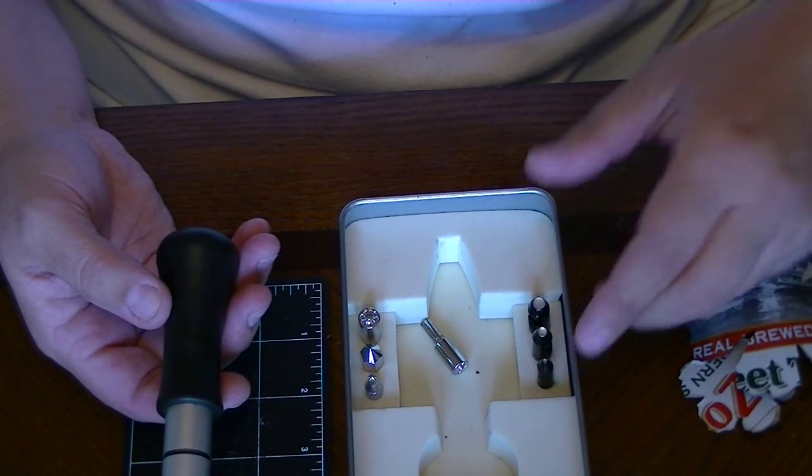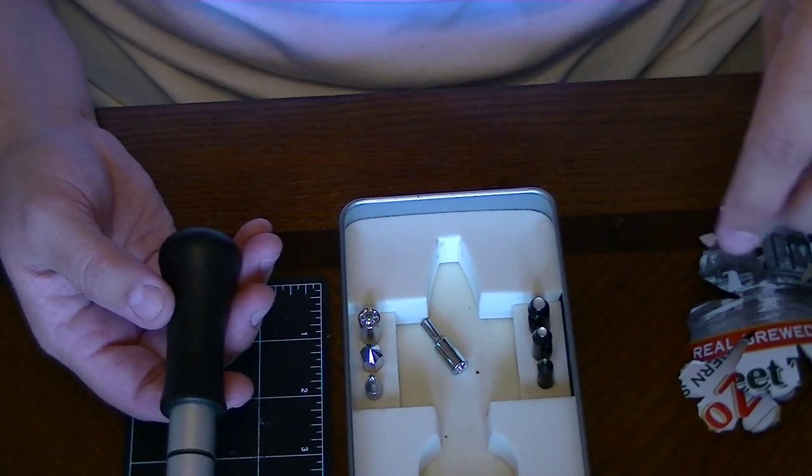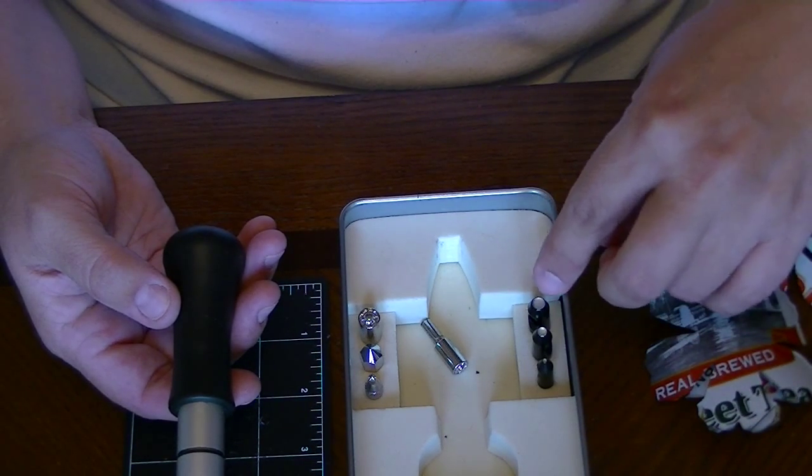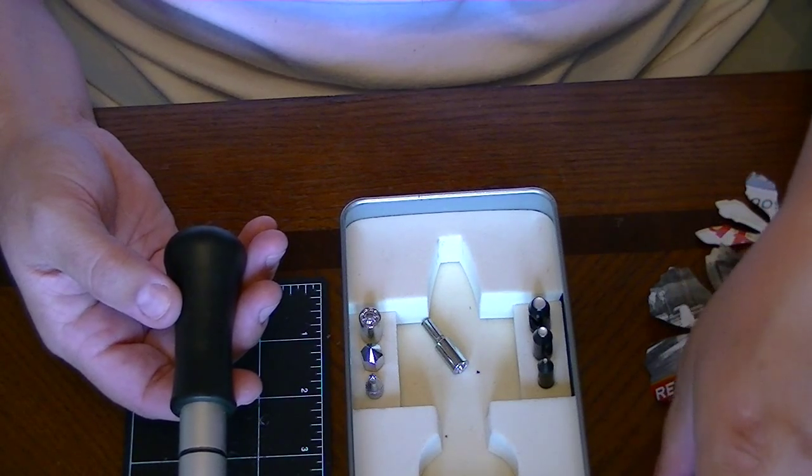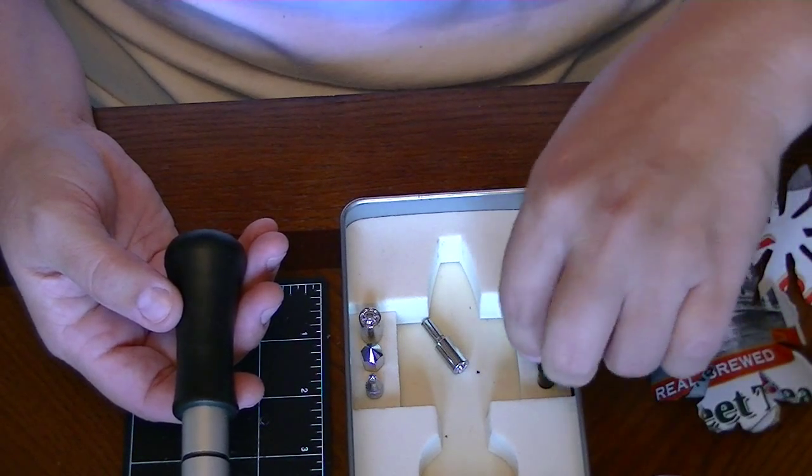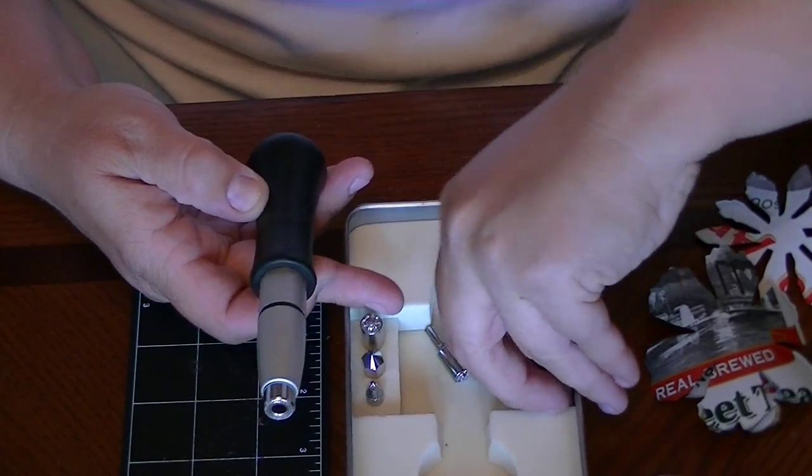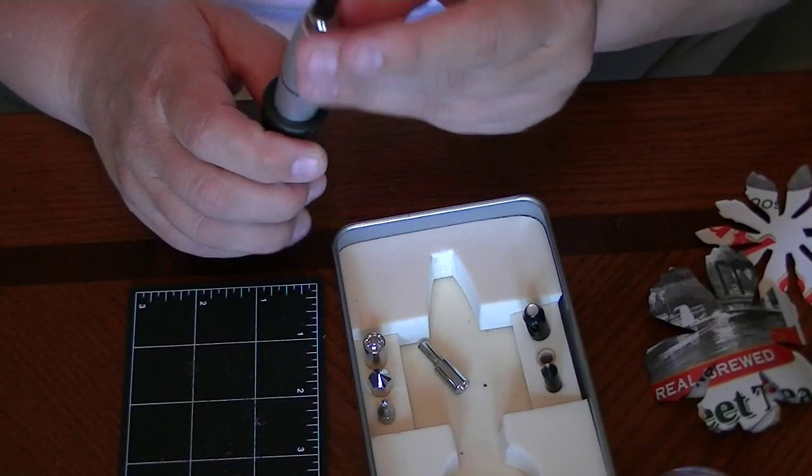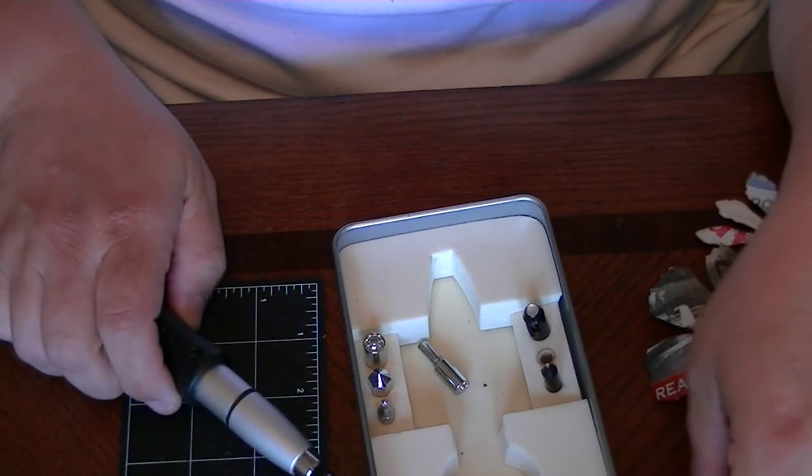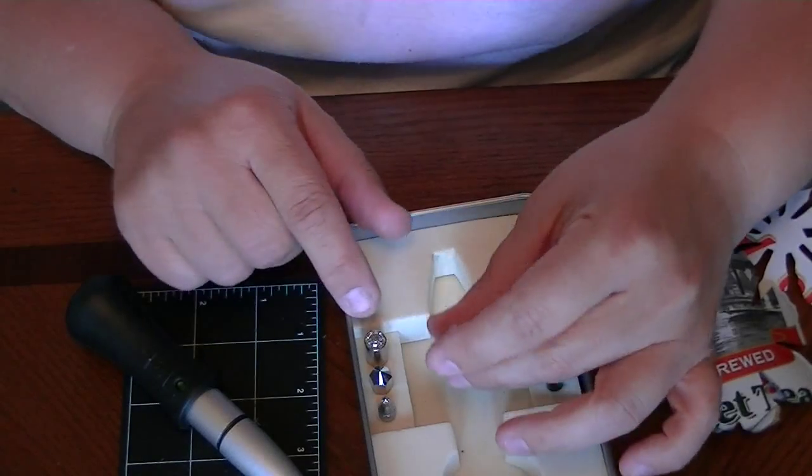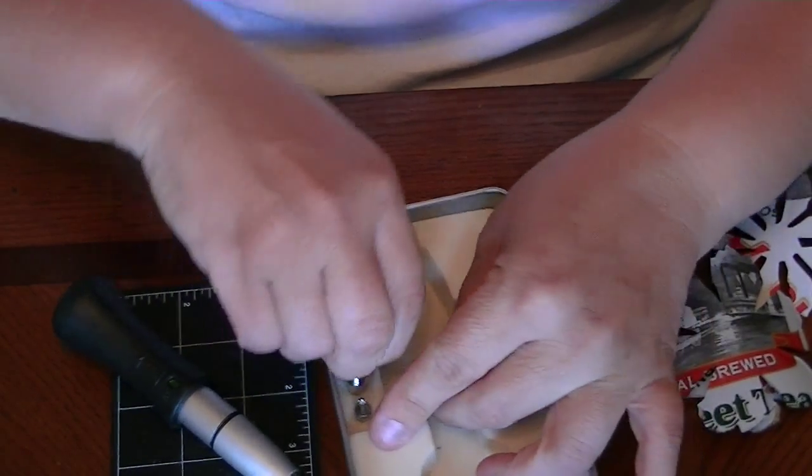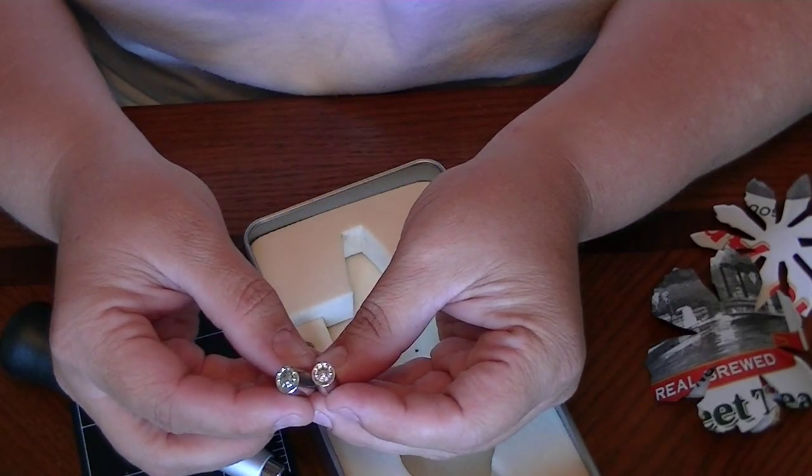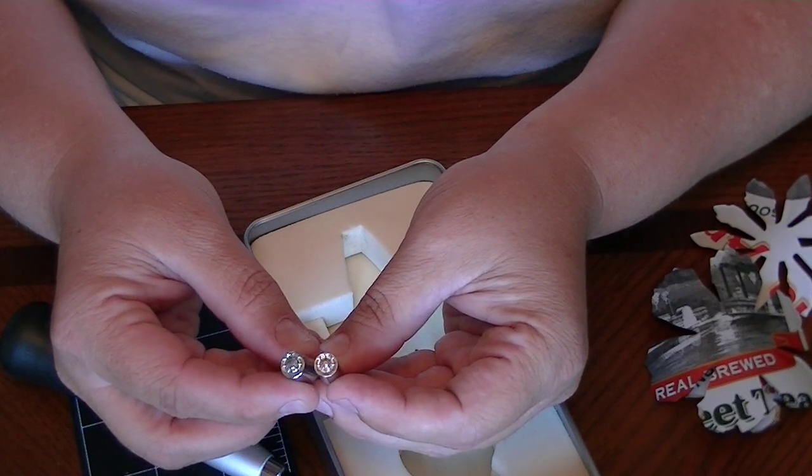These ones here that have the round circles are what you use to cut the holes in your soda can pieces. So you'll want to find the appropriate size based on the size of your eyelets. Typically I use this middle one. And then these pieces over here are what you use to set them in place.